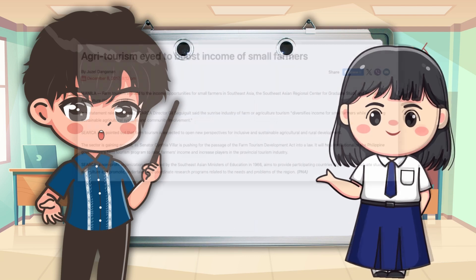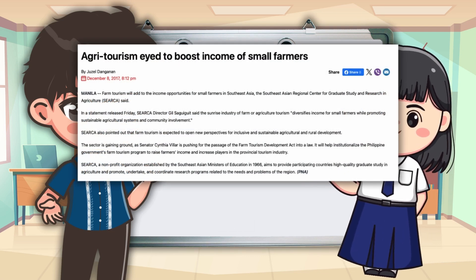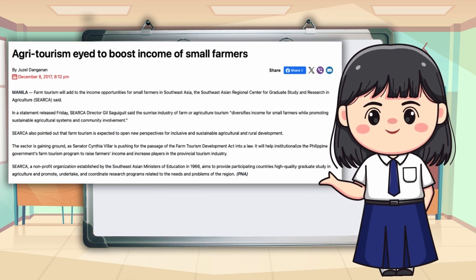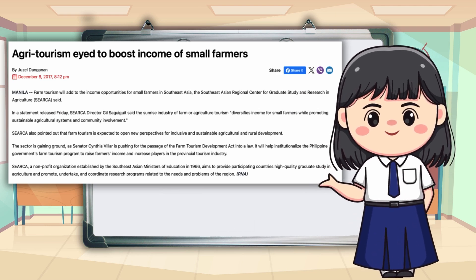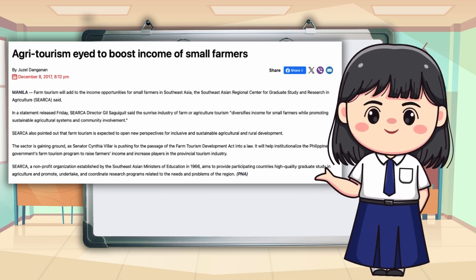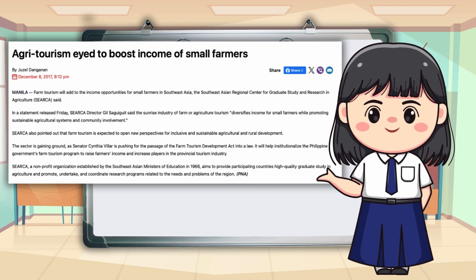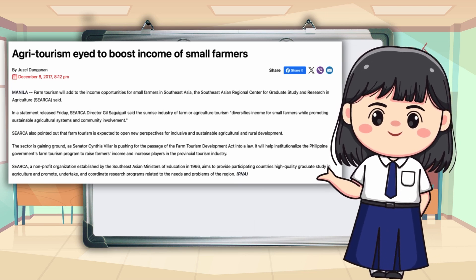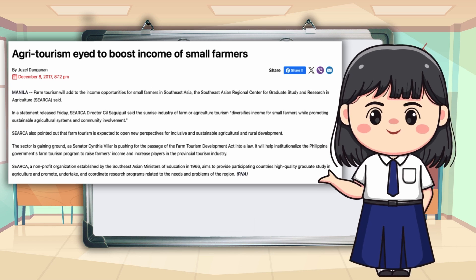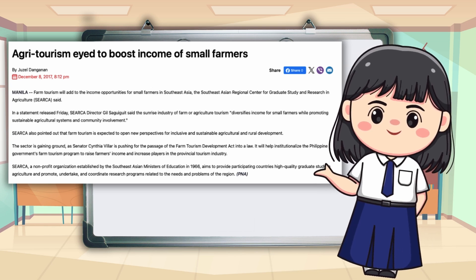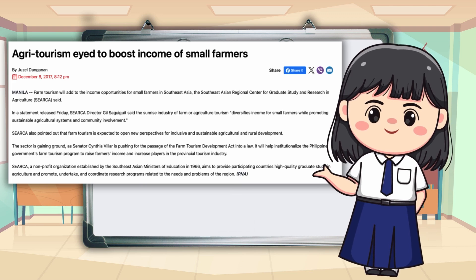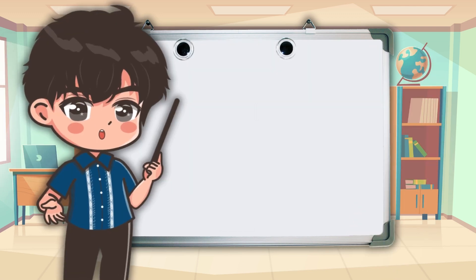Thank you. I found an article about agritourism titled 'Agri-Tourism Idea to Boost Income of Small Farmers.' It discusses how farms are adapting to attract tourists by offering activities like farm-to-table dinners, pick-your-own-fruit opportunities, and educational farm tours. This not only provides a new revenue stream for farmers but also promotes local agriculture. The article emphasizes the importance of creating unique experiences to draw visitors. Agri-tourism definitely brings something special to both the community and the farmers.